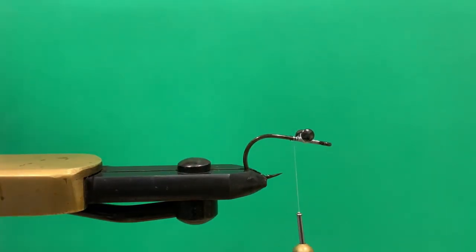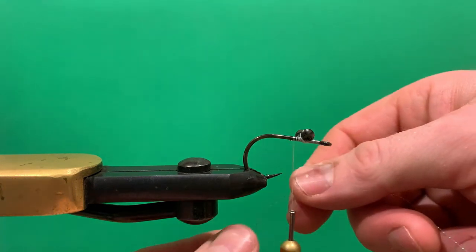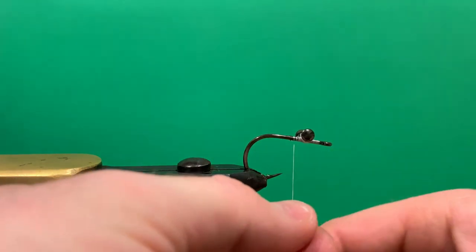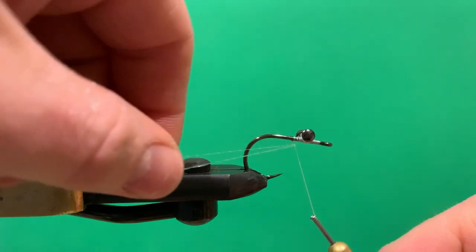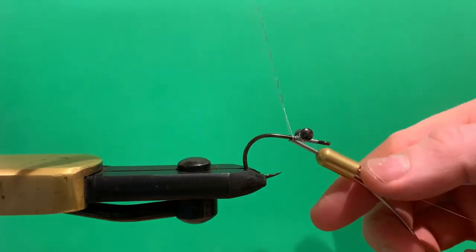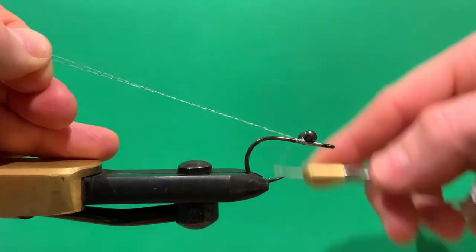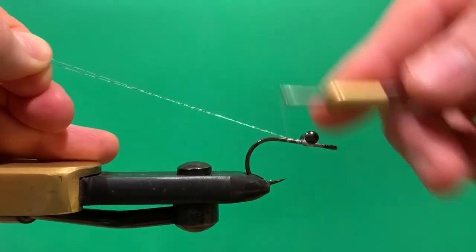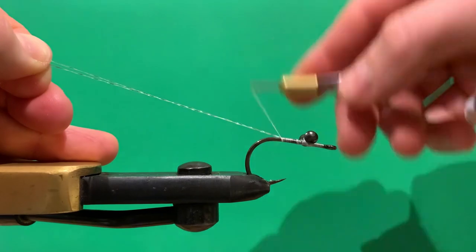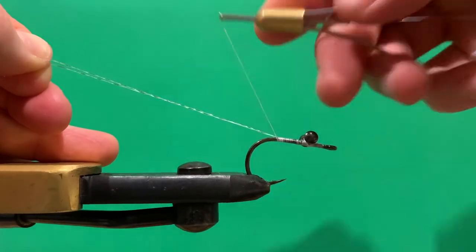At this point I'm going to start attaching my crystal flash. I'm just using one strand and doubling it over the thread. As I say, I don't really like flashy flies, but you can use as much flash as you like. I'll loop the flash over the thread, attach it right here at the back, and then work my thread all the way back with touching turns to the bend of the hook.